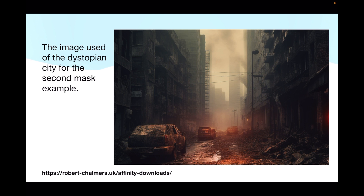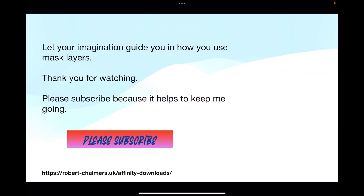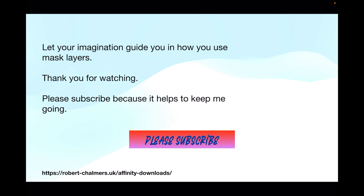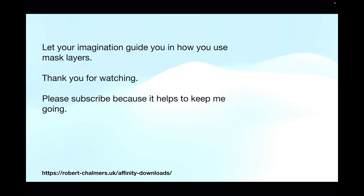This is the image of the dystopian city used for the second mask example. You can see the clear space in the center where those towers are, and the darker outer edges — those are the areas where the mask has been applied. Let your imagination guide you in how you use mask layers. Thank you for watching — please subscribe because it helps to keep me going.